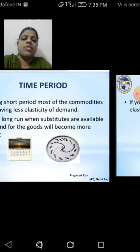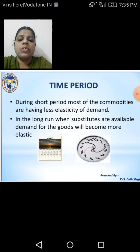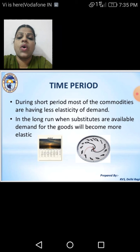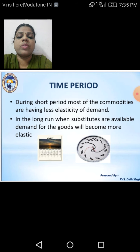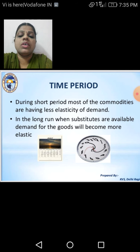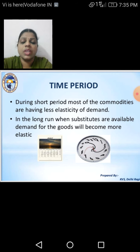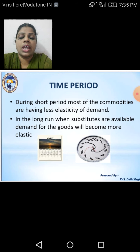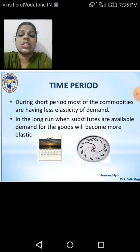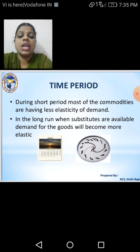The next factor is time period. During the short period, most commodities have less elasticity of demand. The short period ranges from 6 months to 1 year. Within this time period, whatever changes occur in prices, demand will be least affected, because customers will wait for a time period and only after that will they change according to price fluctuations. So during the short period, most commodities have less elasticity of demand.